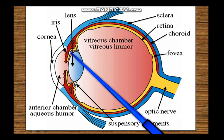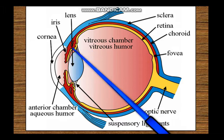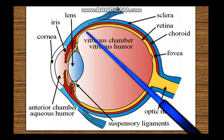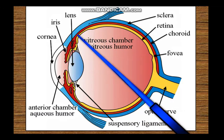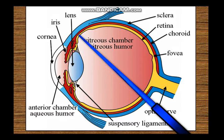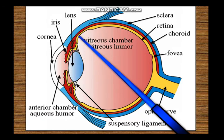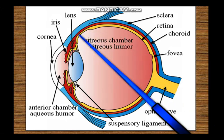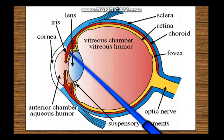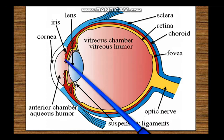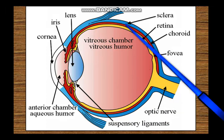This non-neural extension is called the pars ciliaris retinae and pars iridis retinae. The junction between the neural part of the retina and this anterior non-neural extension is a serrated boundary called the ora serrata. Behind the ora serrata is the neural retina; in front of it, the non-neural extension covers the ciliary body and iris.